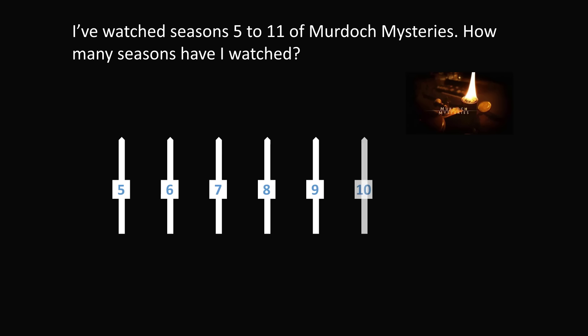Here's another common example of the fence post error. Let's say I've watched seasons 5 through 11 of one of my favorite shows, Murdoch Mysteries. How many seasons have I watched? Most people would do the calculation of 11 minus 5, which equals 6 seasons. But let's go ahead and count this carefully. We have season 5, 6, 7, 8, 9, 10, and 11. And this will be a total of 7 seasons. The mistake is counting the difference between season 11 and 5 and not including season 5. So you actually need to do the calculation of 11 minus 5 plus 1 to give you 7 seasons.